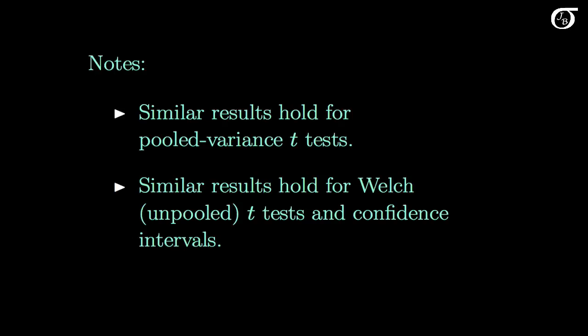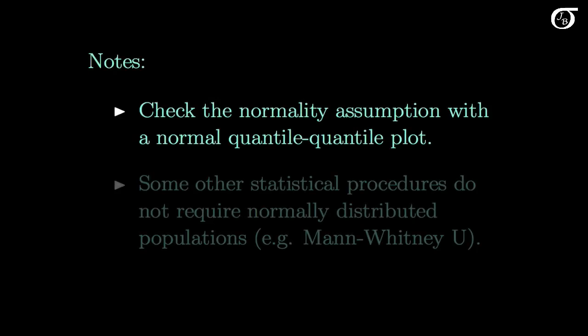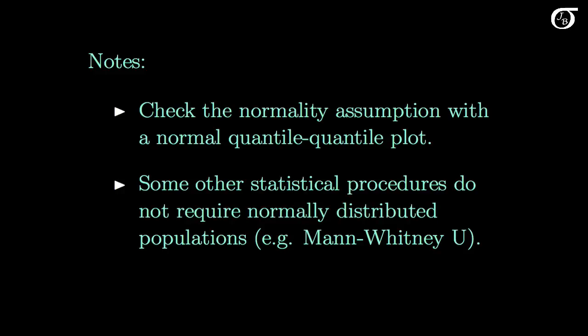It's a wise idea to check whether the normality assumption is reasonable before carrying out t procedures, and I recommend doing so by plotting a normal quantile-quantile plot. Some people recommend doing a test of normality, but that's not my preferred approach. It's also not all about the t procedures — there are other options. For example, some statistical procedures applicable in these situations, such as the Mann-Whitney U test, do not require normally distributed populations and may work better than the pooled variance t test in some scenarios.